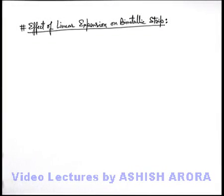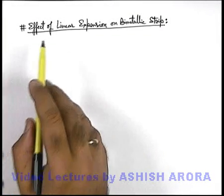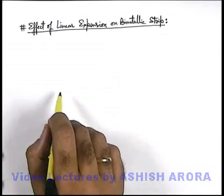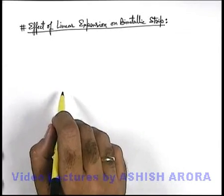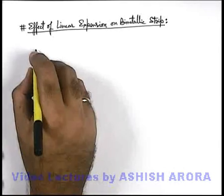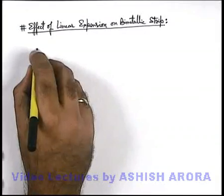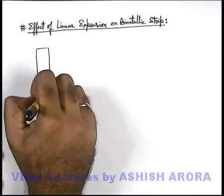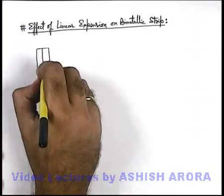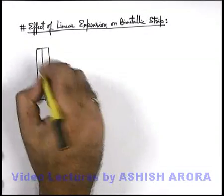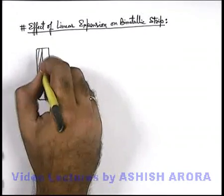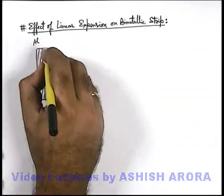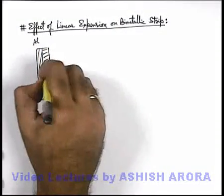Another important concept is the effect of linear expansion on a bimetallic strip. Say if two metal strips are joined together by some rivets — on one side we keep aluminium and on the other side we keep copper.